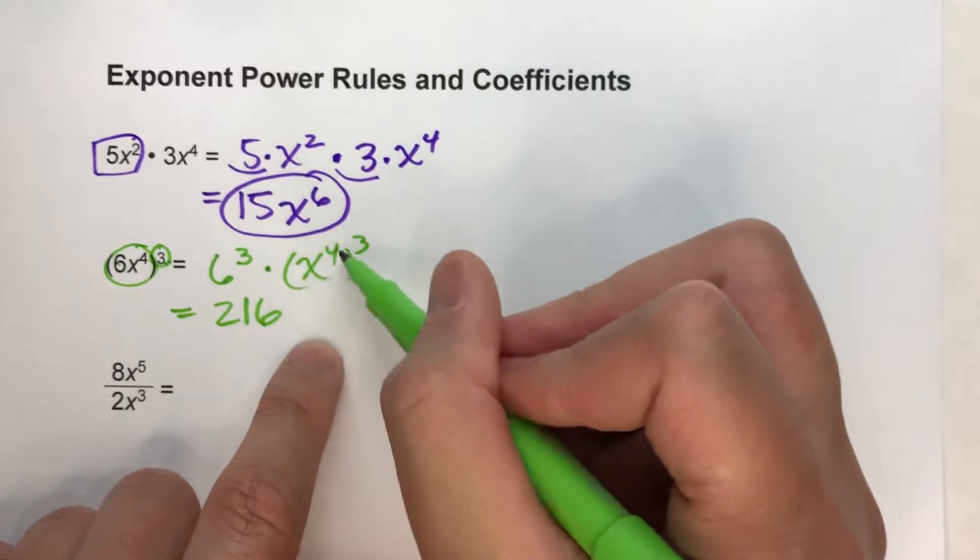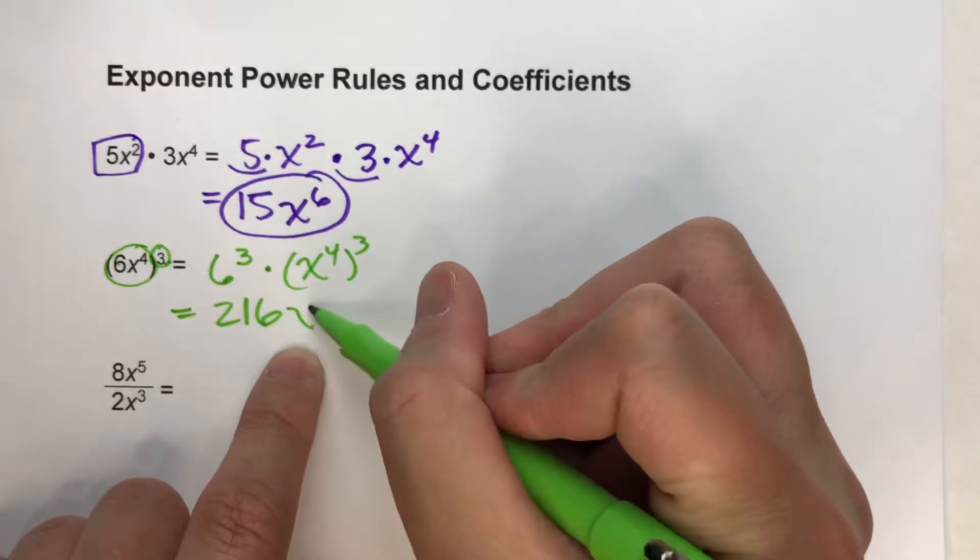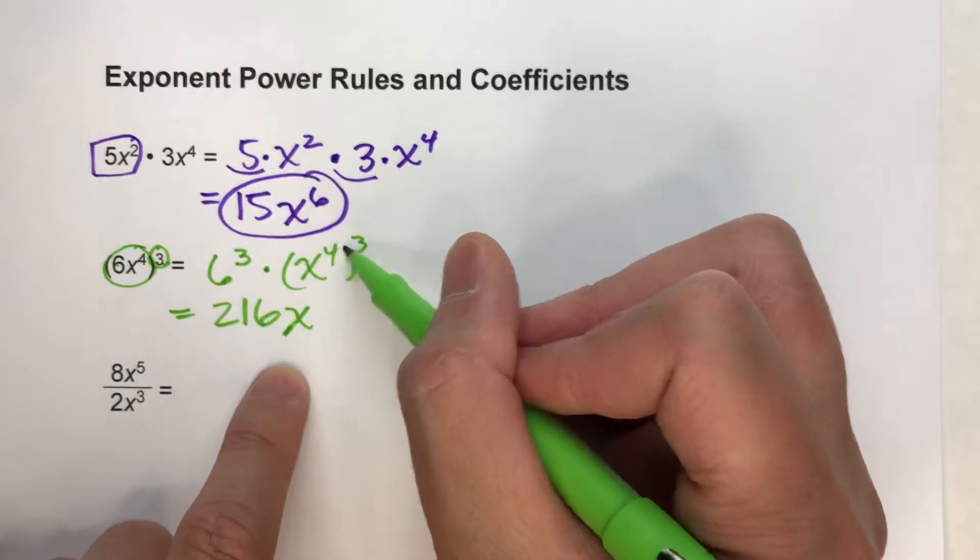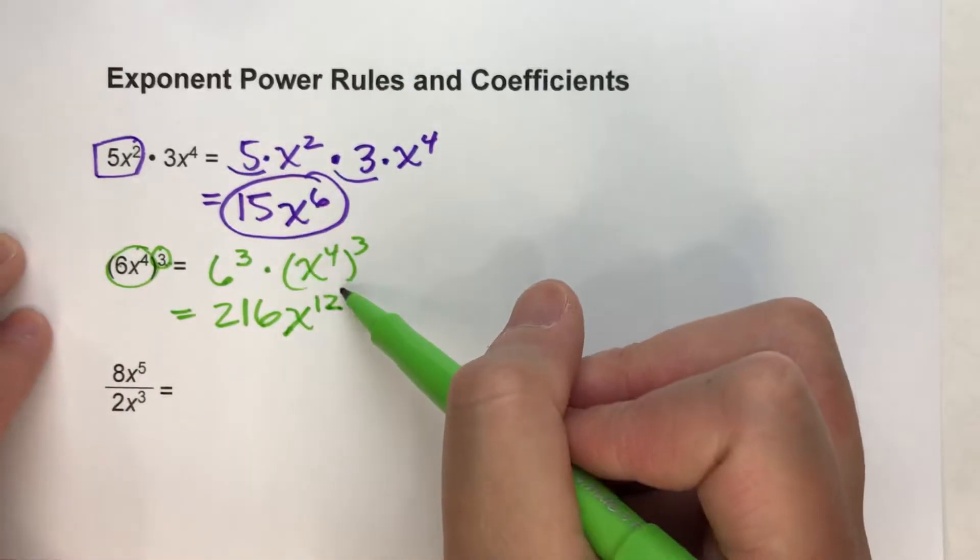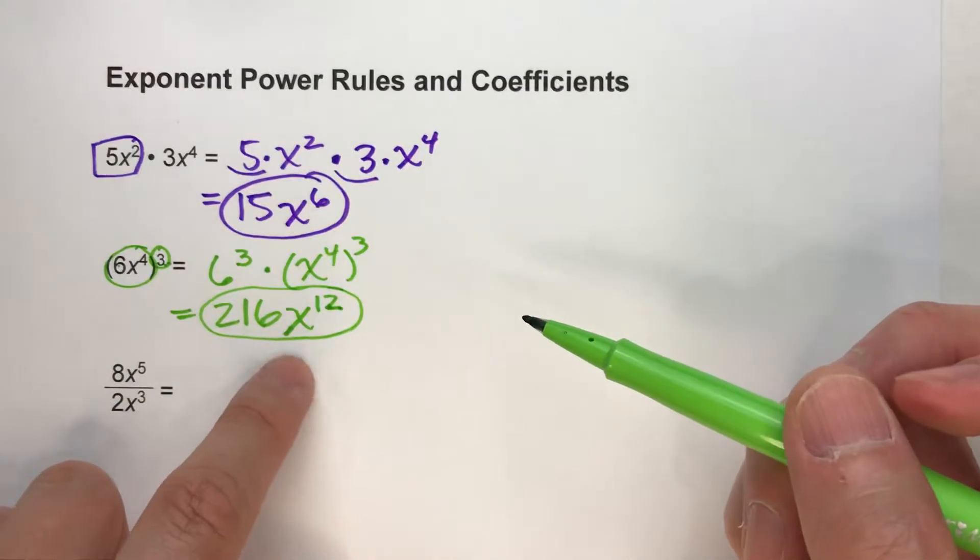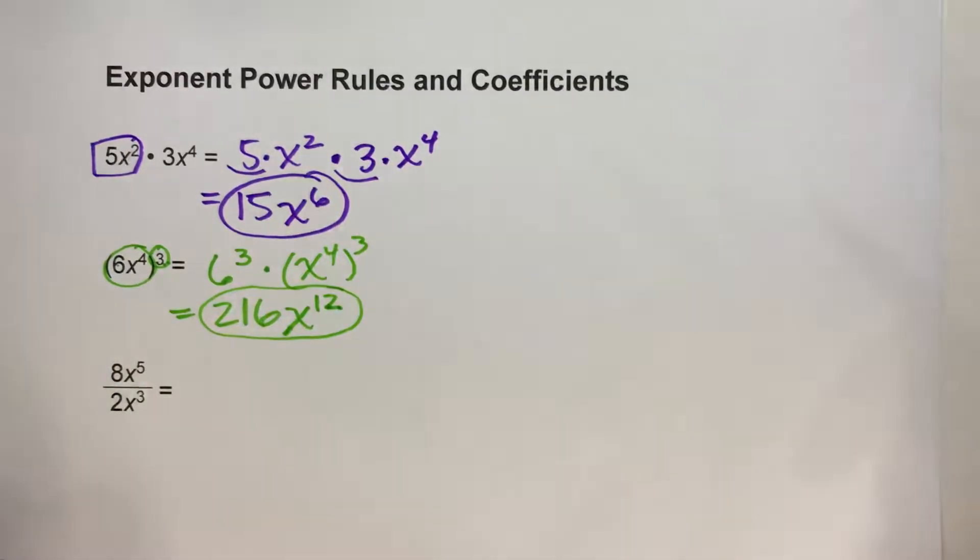And the power rules say when I'm raising a power to a power, I keep the base, and I multiply the exponents. 4 times 3 is 12, so it's x to the twelfth. There is my answer. 216 x to the twelfth.